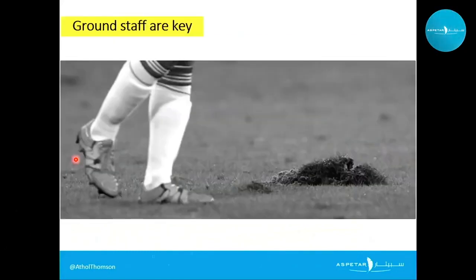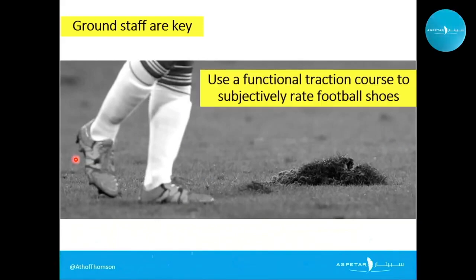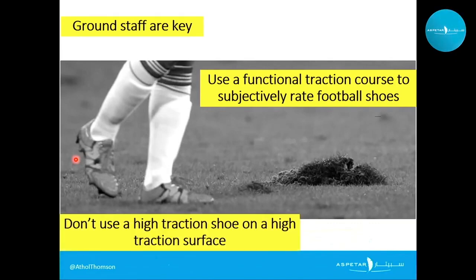In summary: ground staff are key — they're collecting a lot of data we could tap into to understand how shoes can work alongside that information. A functional traction course can be used to subjectively rate football shoes. And it ultimately boils down to not using a high-traction shoe with a high-traction surface — there are two elements to this interaction and we can tune both to our advantage. Thank you.